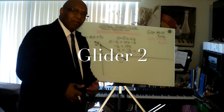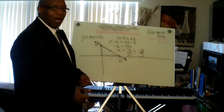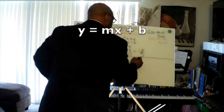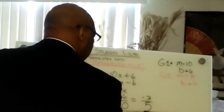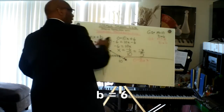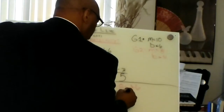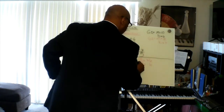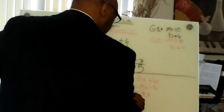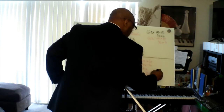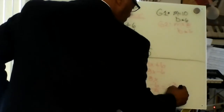For Glider 2, we use the same slope and y-intercept equation. y equals mx plus b. We substitute y with 0. m equals 8, b equals 6. x equals negative 6 over 8, which reduces to negative 3 over 4.